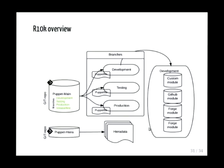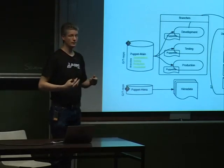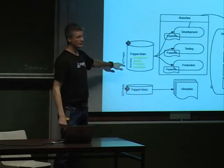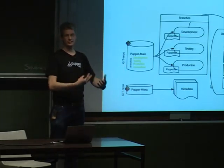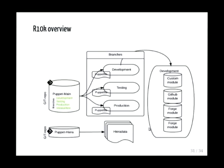R10K uses a central Git repository and creates an environment out of every branch. In the main Git repository I have development, testing, and production branches — R10K creates a separate directory for each. It checks out each version from the Puppetfile in each branch and loads all modules from the internet — from Puppet Forge, Git repositories, whatever you want. If you add another branch and run R10K, it creates another environment. And of course you need a separate repository for Hiera as well.